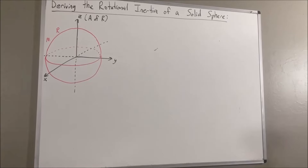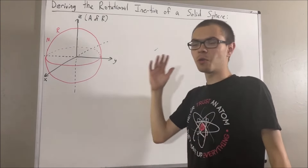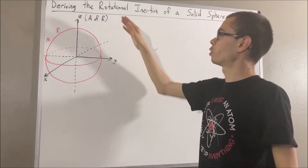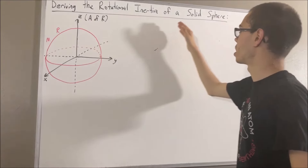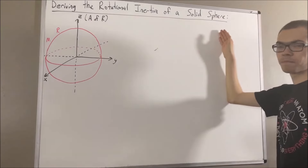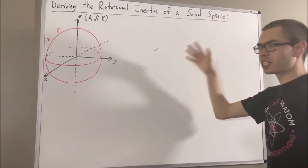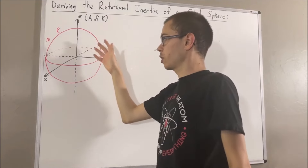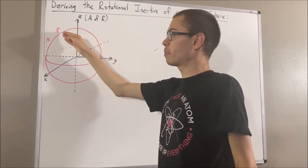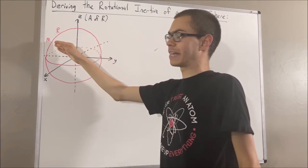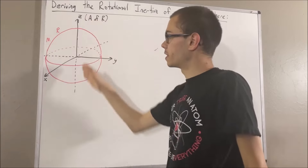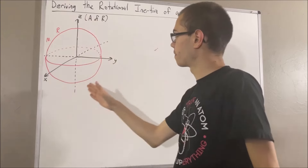Hello! In this video, we are going to derive the formula for the rotational inertia of a solid sphere. We're given a solid sphere with radius capital R and mass capital M, and we'll say that the axis of rotation is the z-axis.